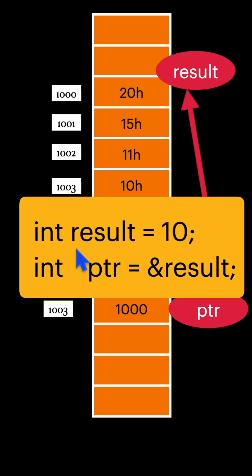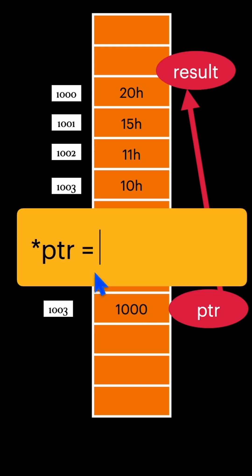And if you want to change the value of this variable result, you can easily do with the help of this pointer. Star ptr equals to 1000 if you write, it will change the complete 4 bytes here.